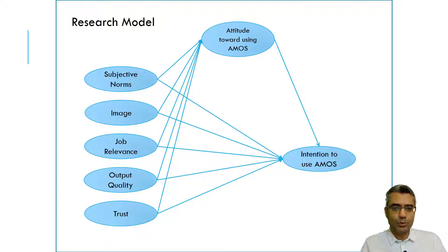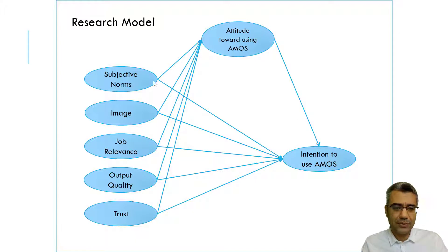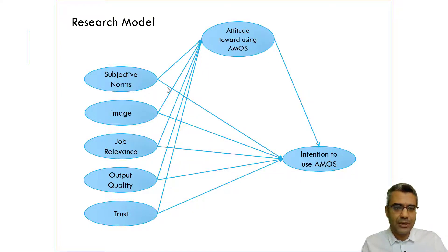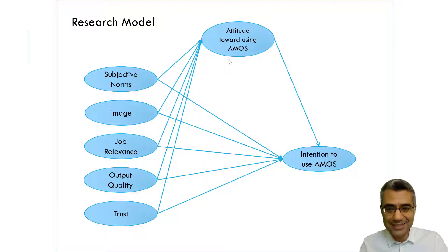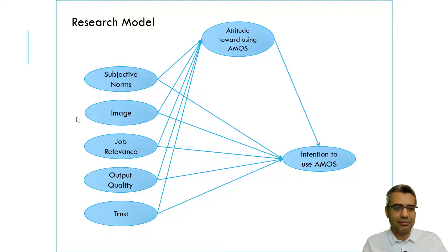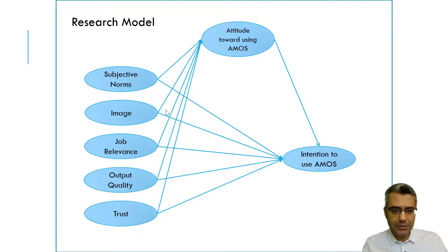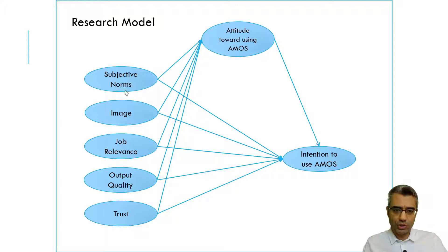This is the research model that we want to test. There are five exogenous variables, or independent variables, that explain attitude, and then attitude explains intention to use AMOS. This is a mediator and this is the dependent variable. So far, what we know is we have five exogenous variables and two endogenous variables.